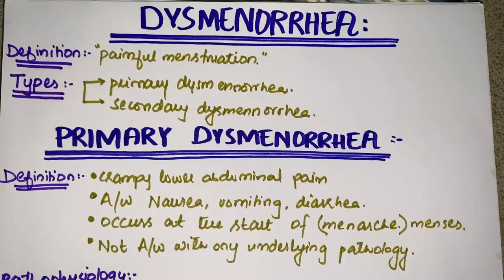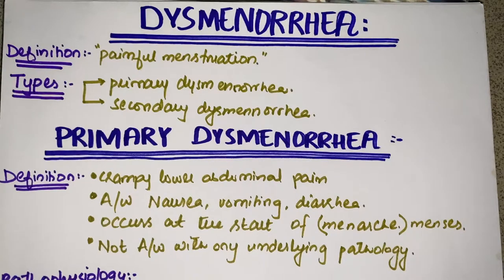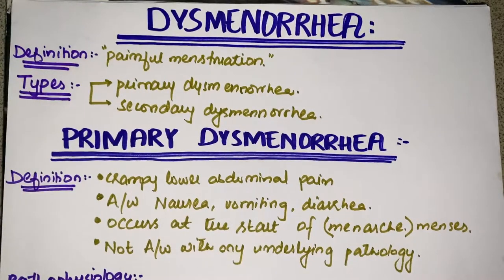By the end of the video you will have a great grip on primary dysmenorrhea, its pathophysiology, and its treatment. So what is dysmenorrhea? Its definition: it is painful menstruation. Whenever you come across the prefix 'dys-' before a word, it means painful. So dysmenorrhea means painful menstruation, just as dysuria means painful urination.